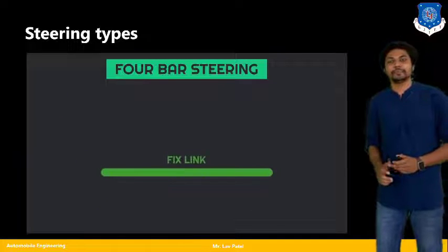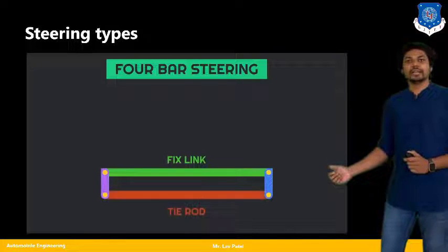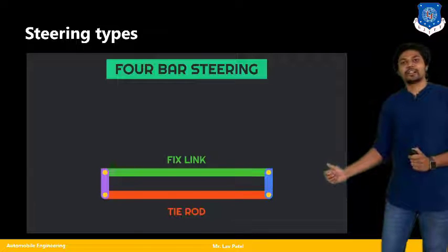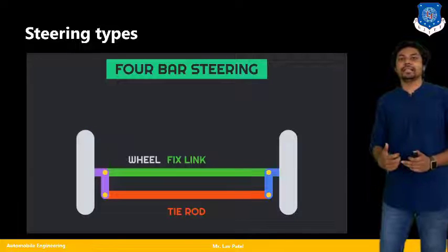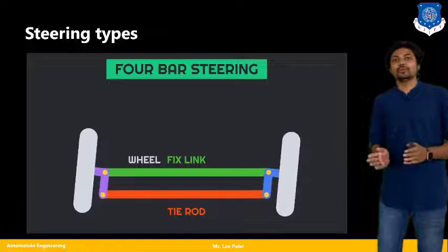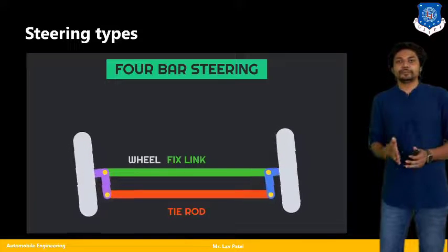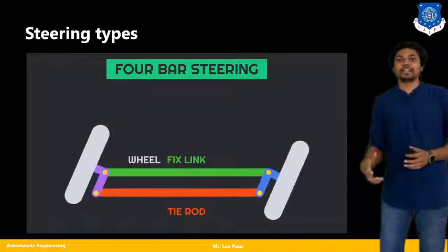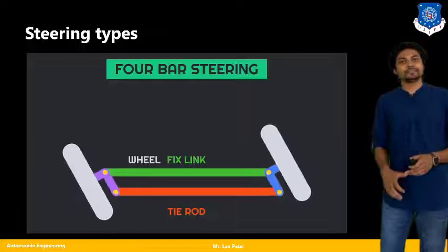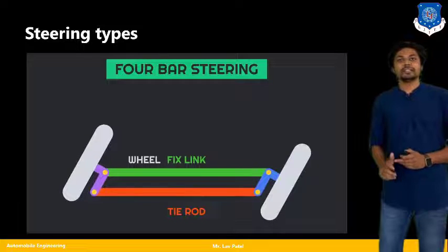Let us see these three types one by one. In the four-bar steering, you will find a fixed link — that link must remain fixed throughout the driving — and one larger tie rod that is connected to the fixed link by two other links. By giving input to my tie rod the wheels react accordingly. So if I want to take a left or right turn, my tie rod moves towards the left or right side while the fixed link remains fixed throughout the entire mechanism. This is the four-bar steering system.